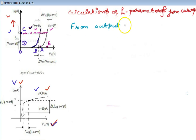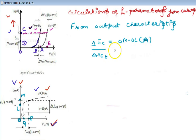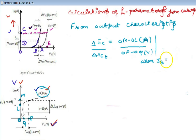Now we are going to the output characteristics. We are taking points O, P, Q and correspondingly O, L, M. Here we are finding delta IC and delta VCE. Delta VCE is OP minus OQ — it is in volts. The IB is kept constant at 60 micro-ampere. Delta IC over delta VCE gives admittance in the common emitter configuration.